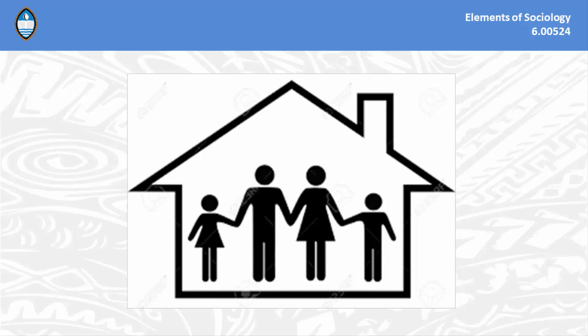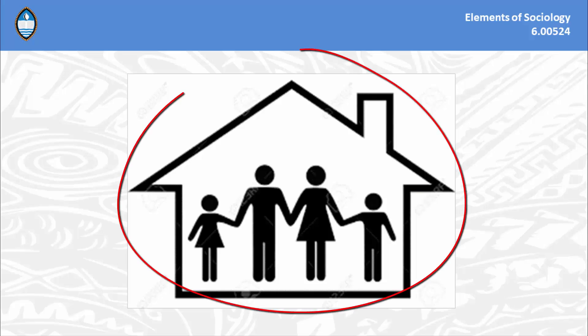What is social structure? First of all, let's look at the word structure. Structure refers to some sort of ordered arrangement of parts or components. For example, the structure of a building, as shown in this illustration, consists of a floor, walls, a roof, and so forth. We can see that an ordered arrangement of different parts makes up the building.